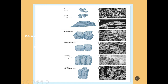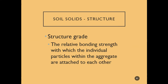Prismatic and columnar are taller than they are wide. The difference is the top — prismatic has a flat top, and columnar has a rounded top. Angular blocky and subangular blocky have roughly the same size particles; it's just the sharpness of their edges. Granular is smaller and more well-rounded on all sides.